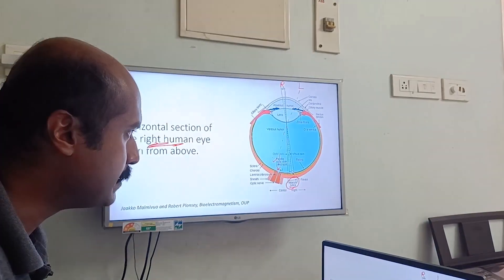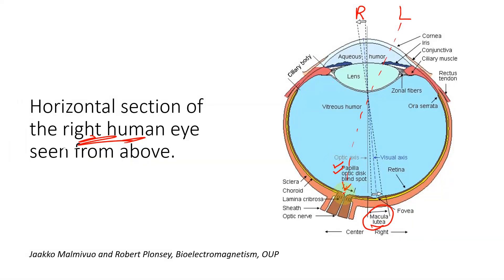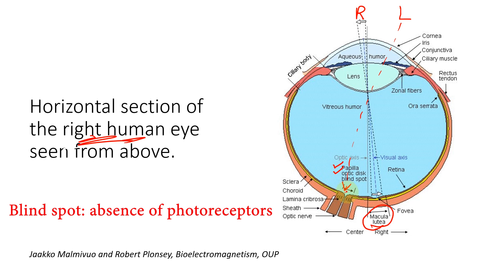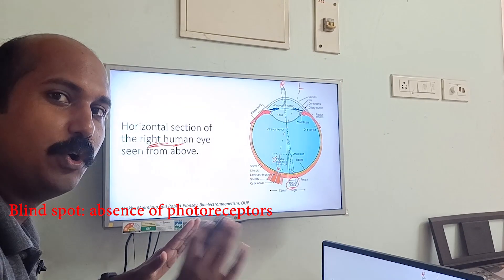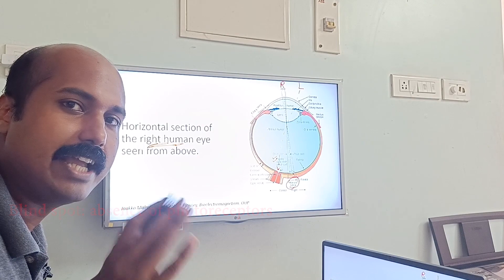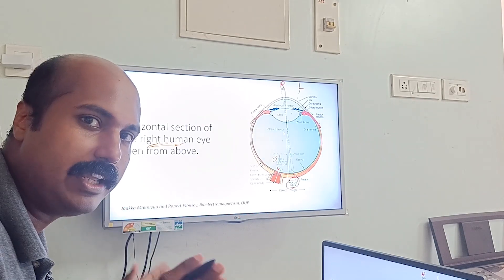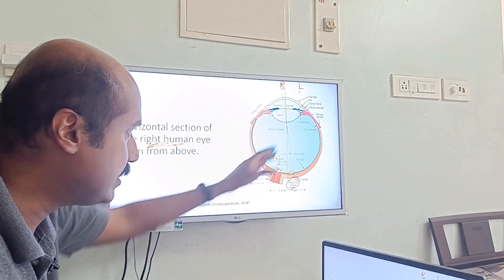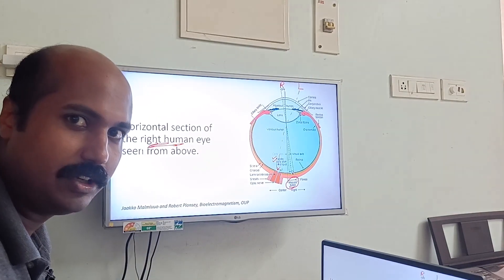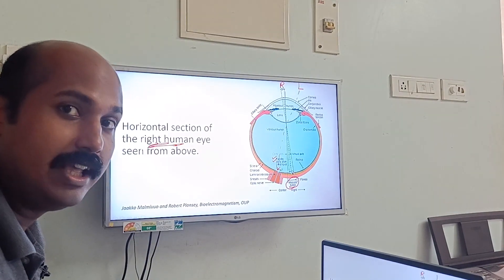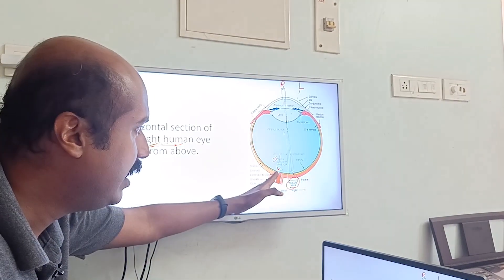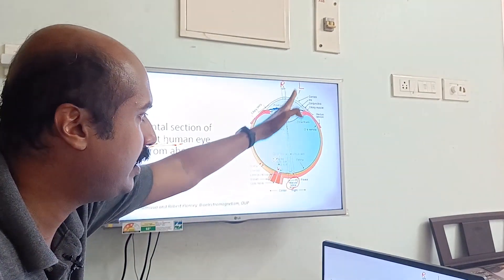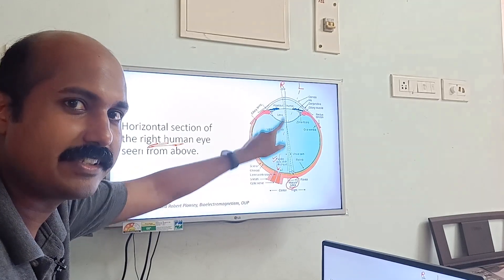This region is also called the optic papilla. It characteristically has an absence of photoreceptors, so whatever falls on this region will be blind - you are not going to get any visual input from any light rays that fall on this spot. That is called the blind spot - the region corresponding to the optic disc.